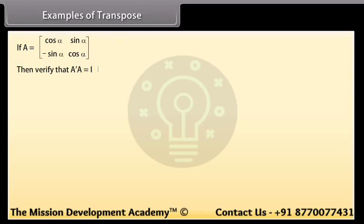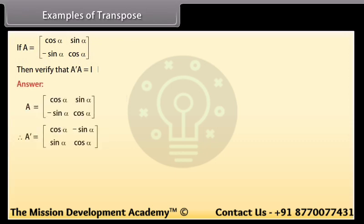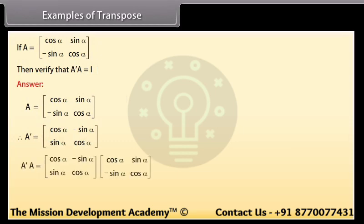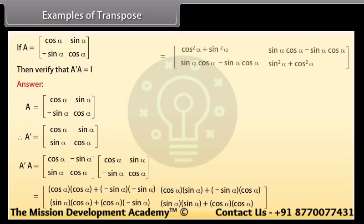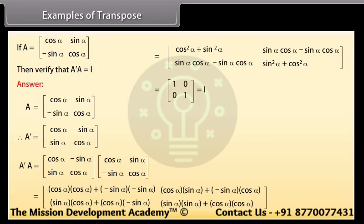If A is the given matrix, verify that the transpose of matrix A times matrix A is the identity matrix. A is given. Therefore, its transpose A' has first row: cos alpha, minus sin alpha; second row: sin alpha, cos alpha. Multiplying A transpose and A and solving, we get A transpose A is equal to the identity matrix. Hence verified.